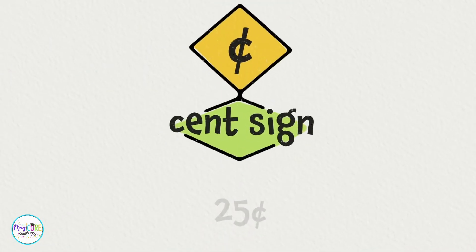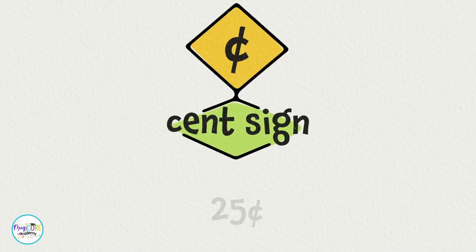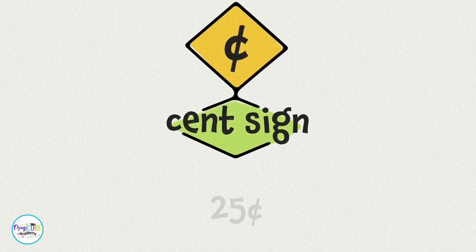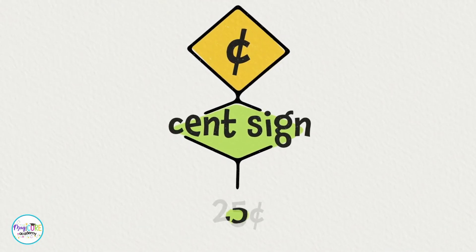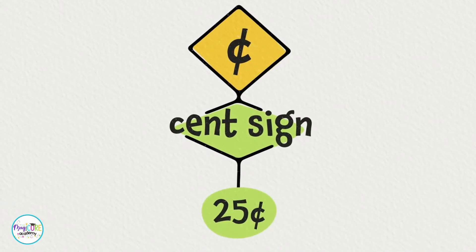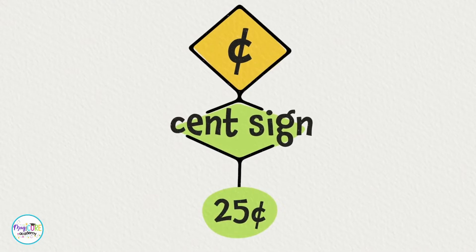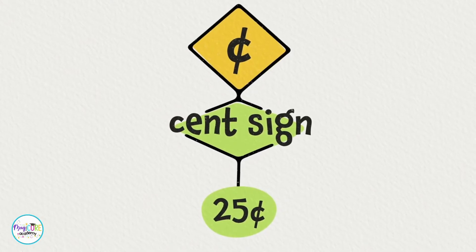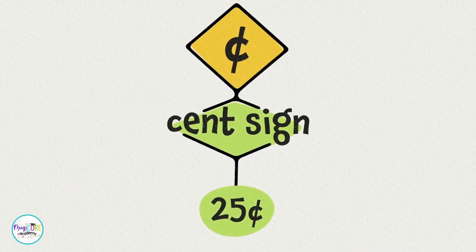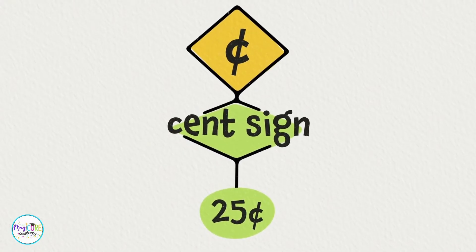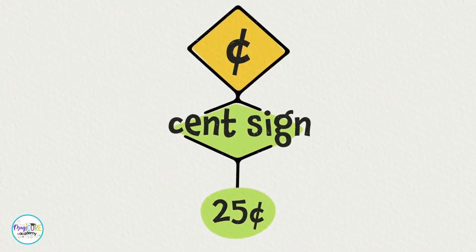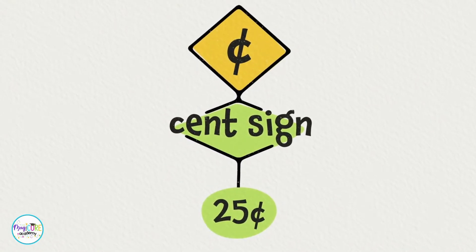Now you know that dollars are on the left side of any decimal, while cents are on the right side. When we write the cent symbol, we put it on its own side as well — we put it to the right side of any whole number when we work with cents.